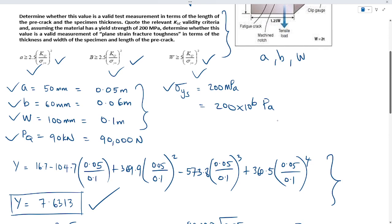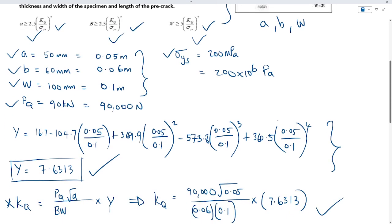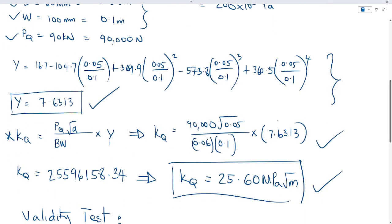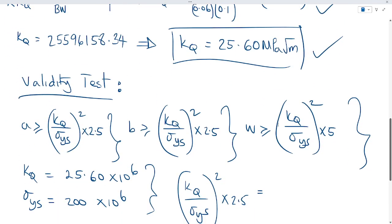Now by calculating our Y using the formula given, our Y equals 7.631. Now by slotting the Y inside the Kq formula, our Kq becomes 25.60 megapascals. Now slotting it into the validity test equation...